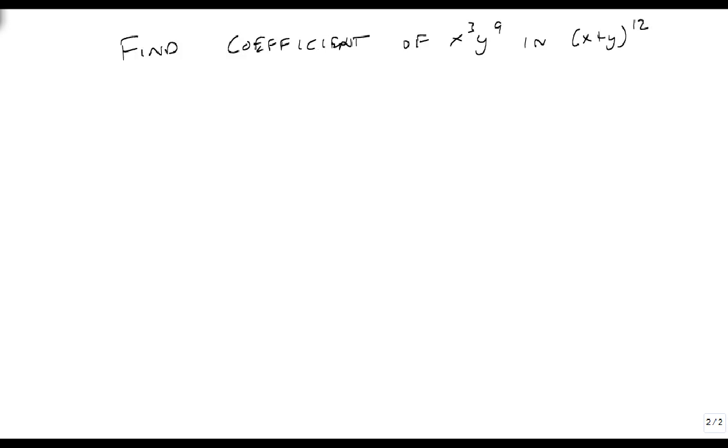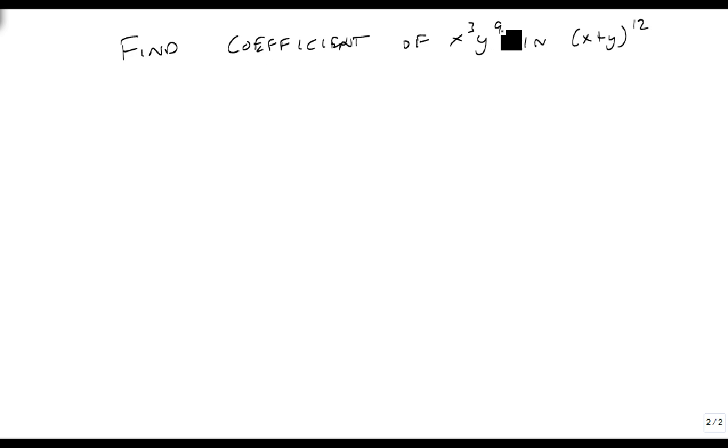So for instance, if we are looking at the coefficient of the x cubed y to the 9th term in x plus y to the 12th, we recognize that y is the second one, n is 12, which means my t is 9.